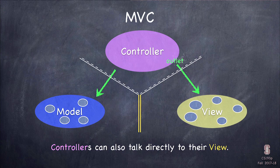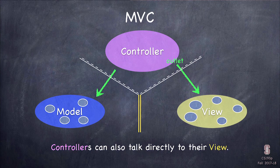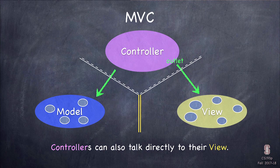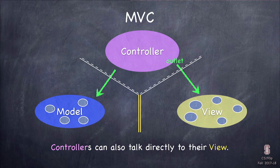Similarly, the controller can talk freely to its views — that's a wide-open green arrow as well. You've already seen this in our concentration app: it was called an outlet, like the outlet to the flip count label. We can send anything we want to it to get it to say what we want in the UI. So the controller can talk to everybody, pretty much all at once.